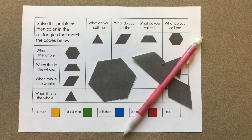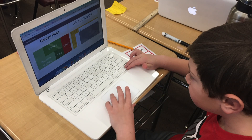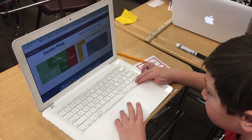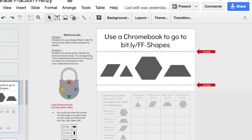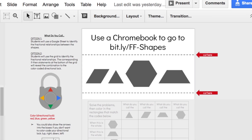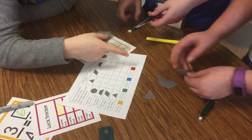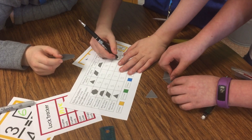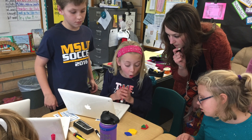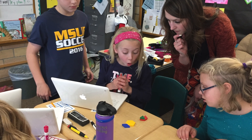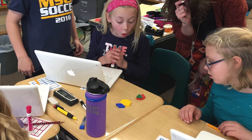For Puzzle 4, What Do You Call, you have a couple of options. Since you'll be using computers to complete the form for Garden Plots anyway, you can print and use the top half of page 5. Either cut out the pattern block shapes for students to use, or have some pattern blocks available. Set these near a computer that will not be busy with students who are working on Puzzle 1.